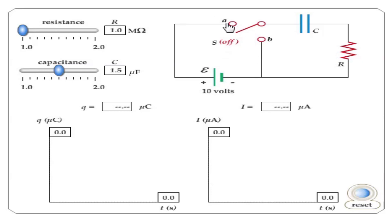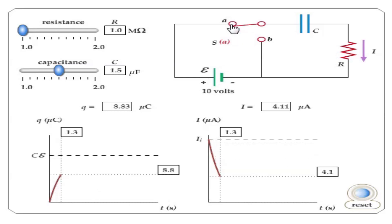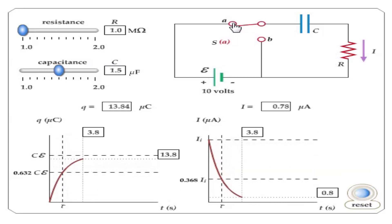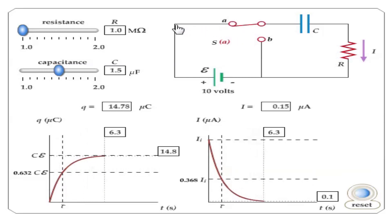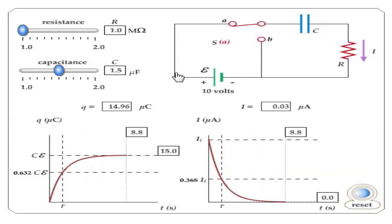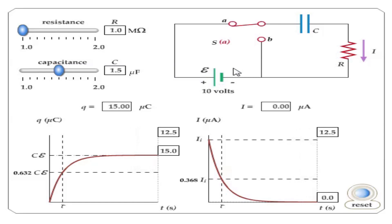Let's focus on this circuit here. As I flick the switch to junction A, we have a circuit that is composed of the battery, the resistor, and the capacitor.